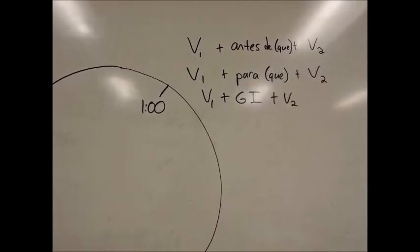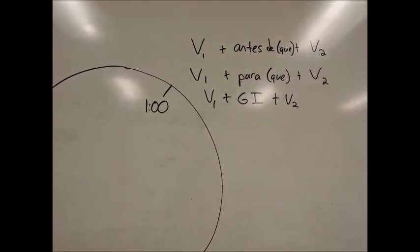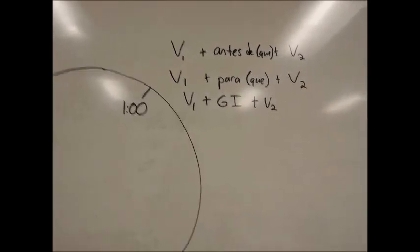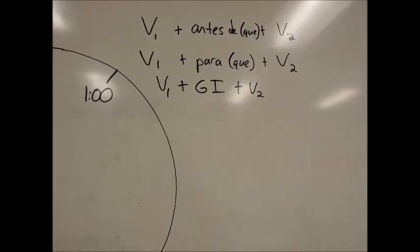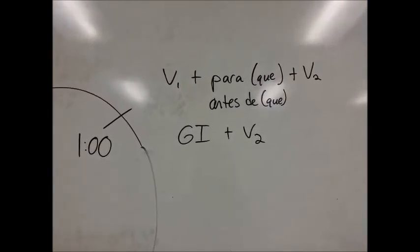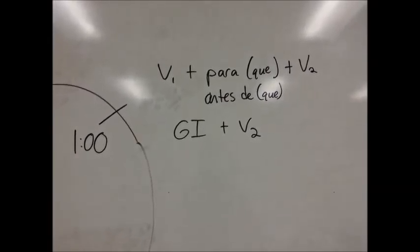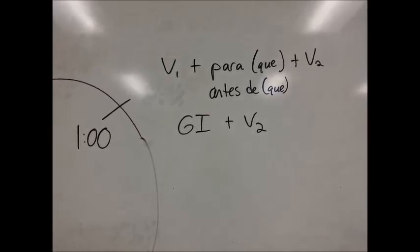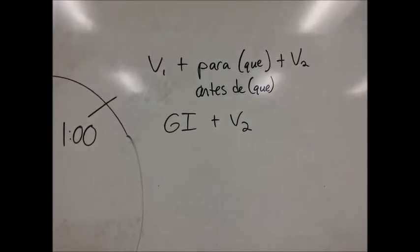V1 is the first verb in the sentence. And then after V1 you add something, whether it's antes de, para, or a G1. I'll explain what a G1 is in just a second. And then you have V2, the second verb in the sentence. V1 represents the first verb, then at one o'clock you can either have para or antes de, followed by V2.